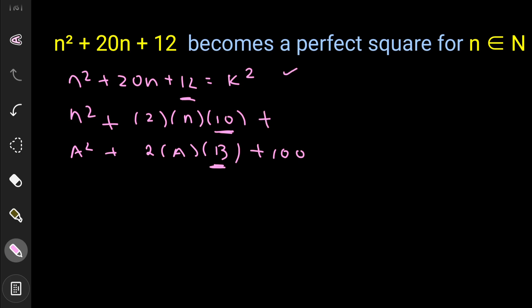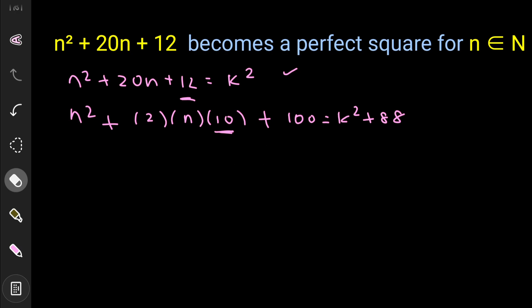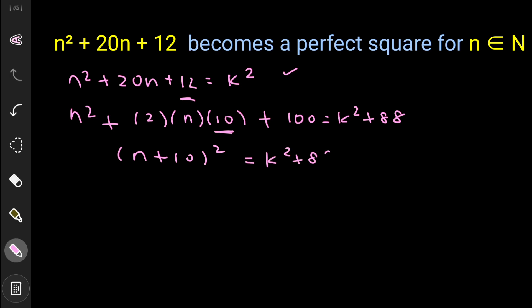Adding 88 to both sides: 12 + 88 = 100 on the left, and k² + 88 on the right. Now the left side is a perfect square: n² + 20n + 100, which is (n + 10)². So we have (n + 10)² = k² + 88.